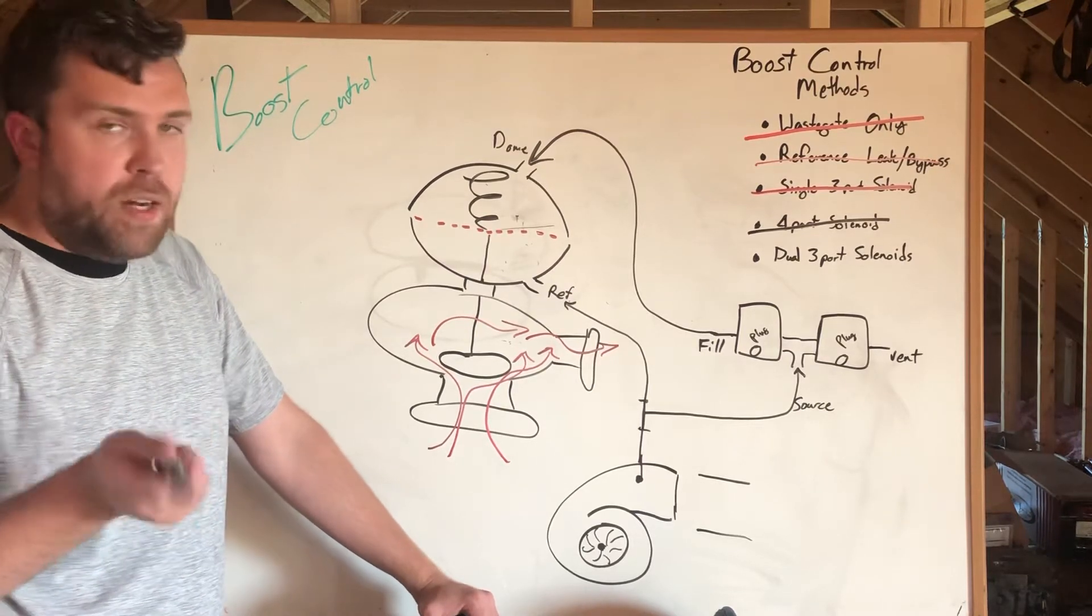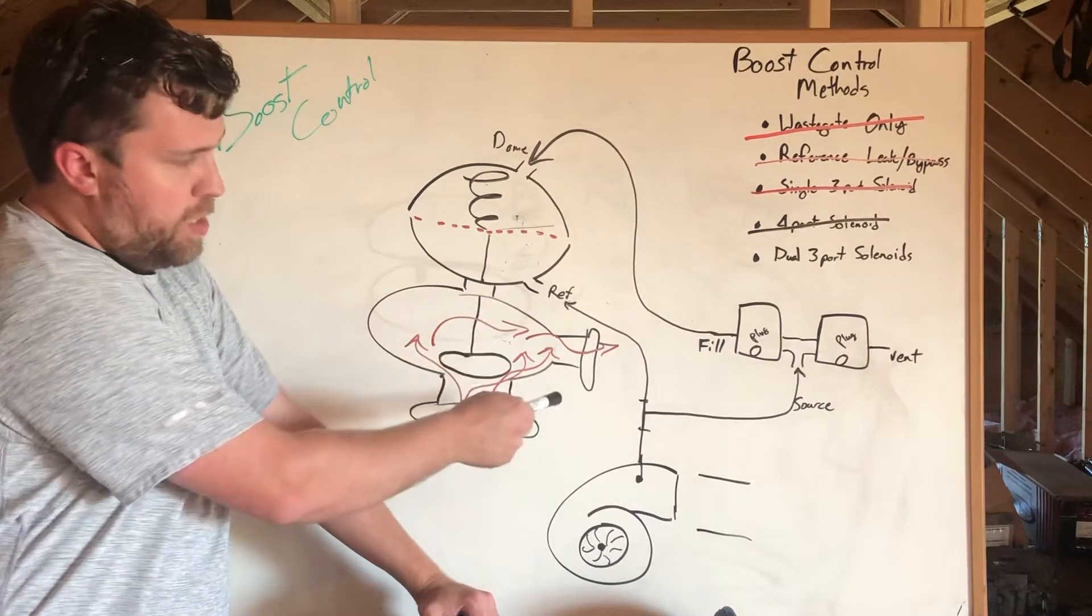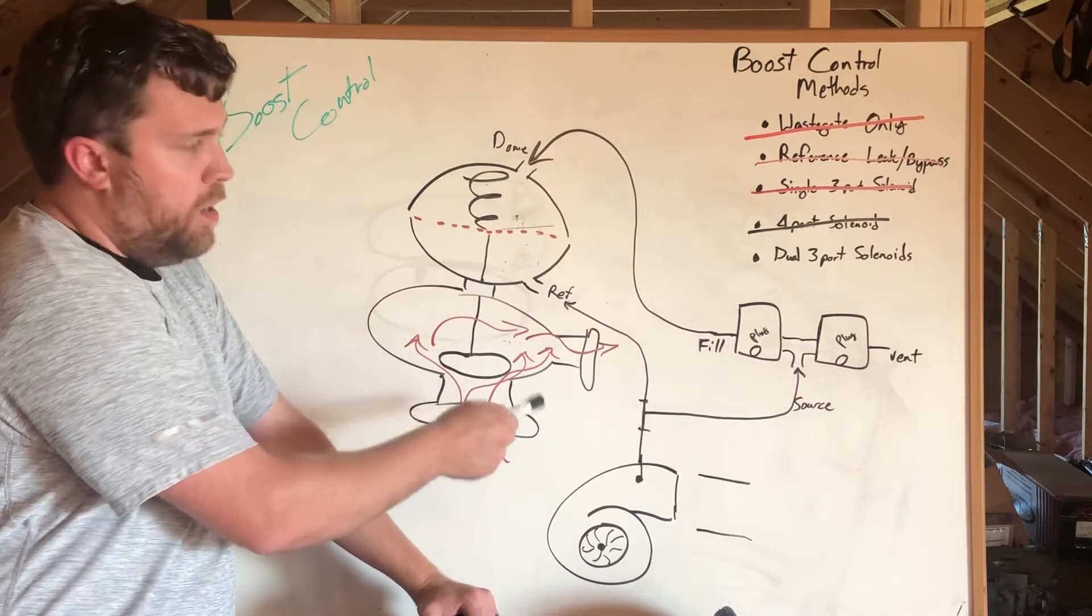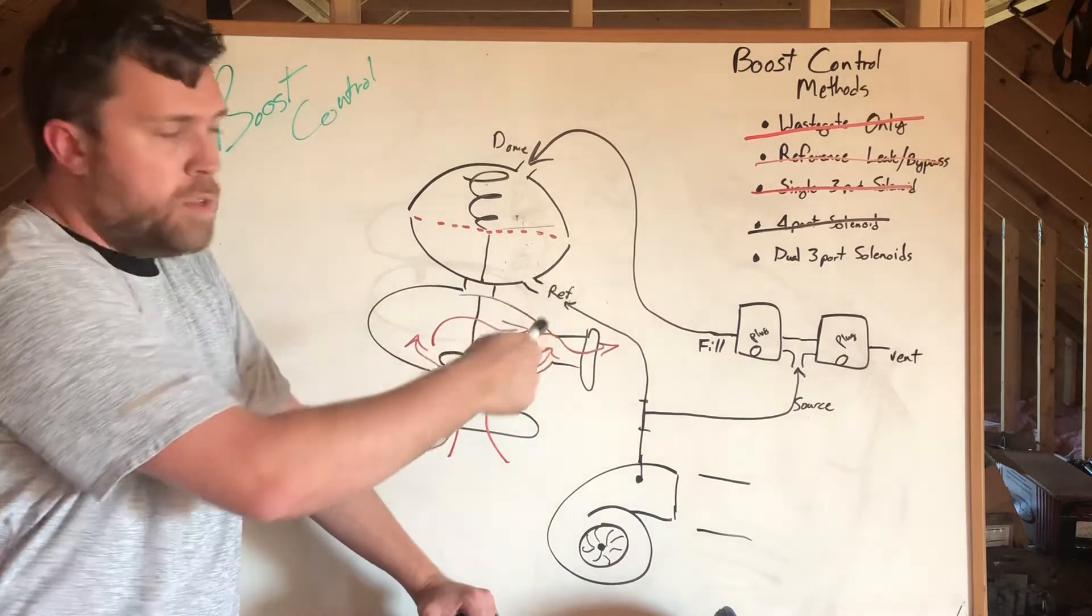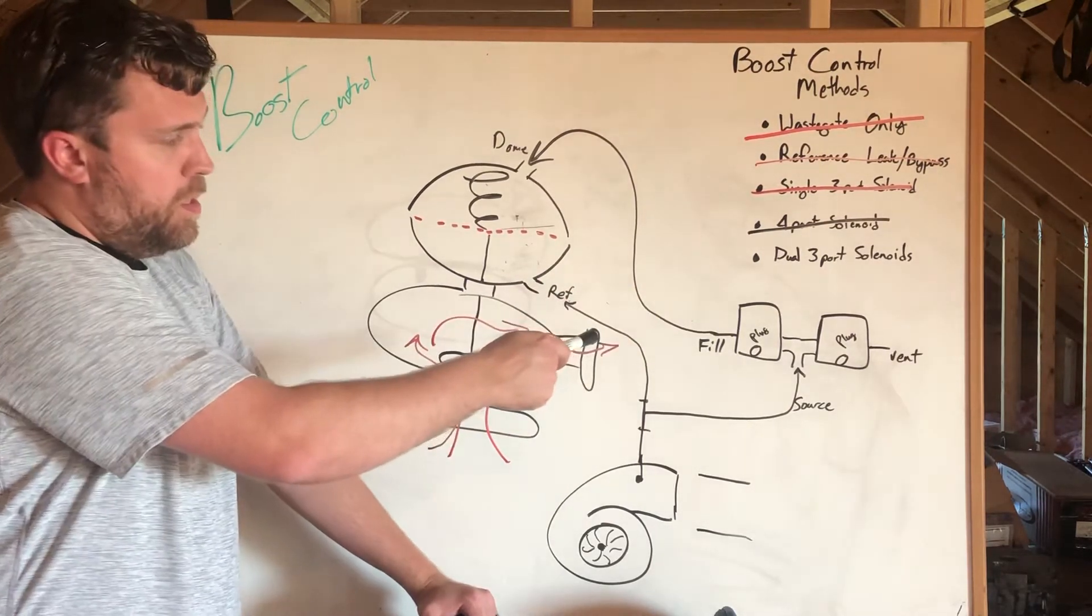The way this is set up is very similar to a single three-port. It's just where we're teed off of the reference line that goes into another tee that feeds two solenoids. One of those solenoids is the output and one of those solenoids is the fill.